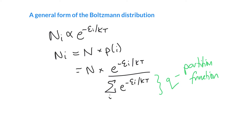The partition function looks at first like just a normalization — we're summing all proportional probabilities to find the actual probability — but it plays a really large role in thermodynamics. If we can calculate the partition function, and all we need for that are the energy levels from quantum mechanics or spectroscopy, then everything in thermodynamics — from the equilibrium constant to entropy, internal energy, and enthalpy — can be extracted from it. In many ways it behaves like the wave function in quantum mechanics: the wave function contains all dynamical information about the system, and the partition function contains all thermodynamic properties.